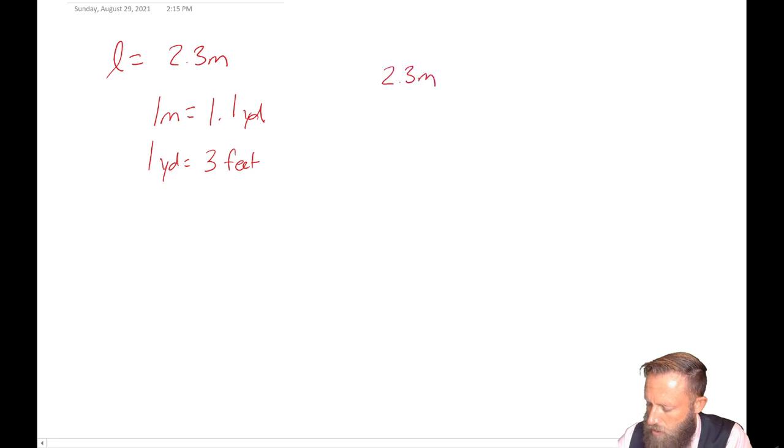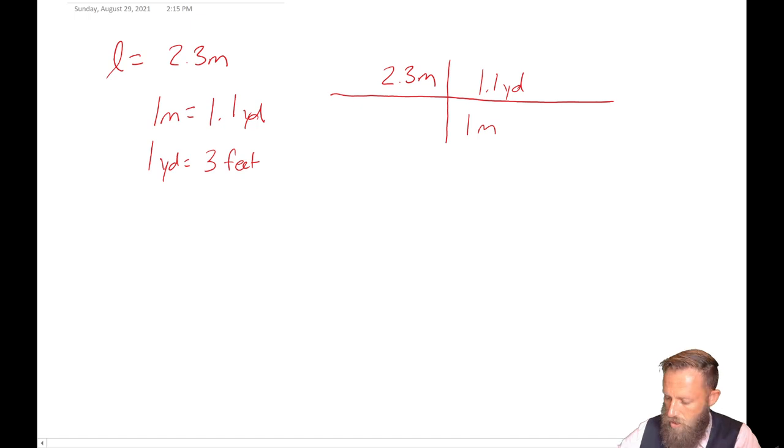We're going to keep multiplying by numbers that are equal to each other. And I like to use a method that I was always taught was called the fence technique or the ladder technique. Basically, it goes like this. So we have our 2.3 meters right here. And what we're going to do is we're going to just kind of have a line that separates the top from the bottom. And I'm going to put a little slash here. And what I'm going to do is the thing to the right here now has to be equal to one. So for instance, if I put one meter here, and 1.1 yard here, that's equal to one, because one meter over 1.1 yard will cancel each other out because they are equal to each other.